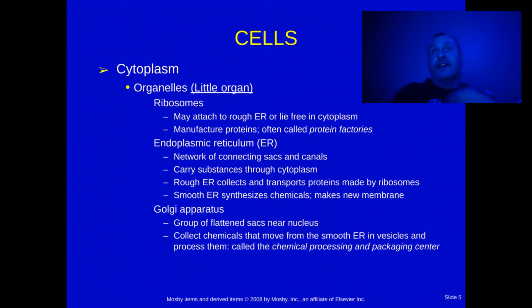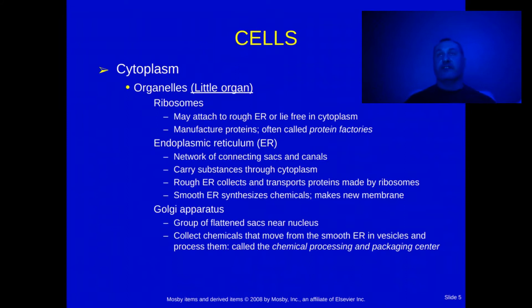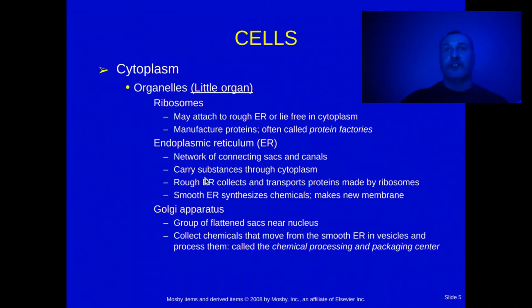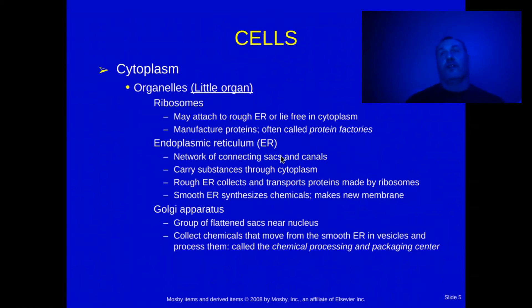The first organelle is the ribosome — this is the protein factory of the cell. The endoplasmic reticulum, or ER, comes in two types: rough and smooth. 'Reticulum' means net-like, so it's a network of connecting sacs and canals. The rough ER transports proteins; the smooth ER synthesizes chemicals.